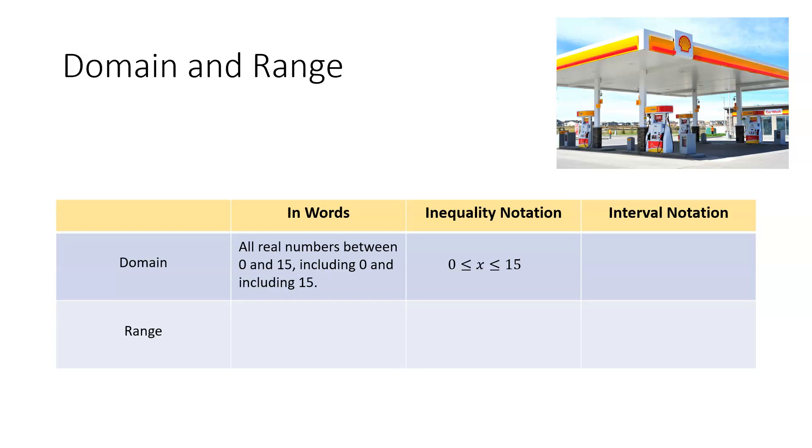The last type of representation for our domain is interval notation. And basically, you just want to put your two end points or end values, which are 0 and 15, and separate them with a comma, and then place them in between a set of brackets.